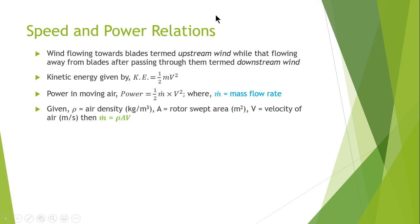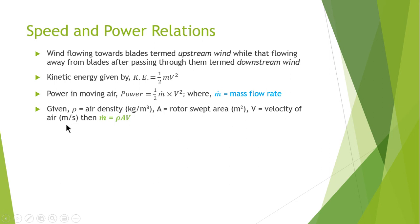The mass flow rate of air can be calculated by multiplying three factors: rho, which is air density measured in kilograms per cubic meter; A, the rotor swept area measured in square meters; and v, the air velocity in meters per second. Therefore, mass flow rate equals rho times area times velocity.